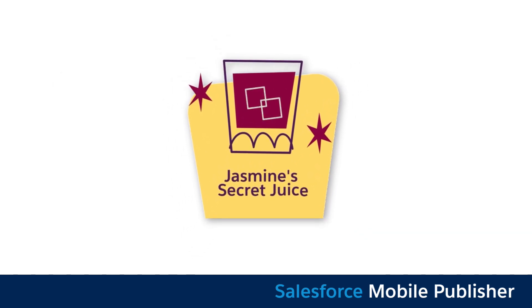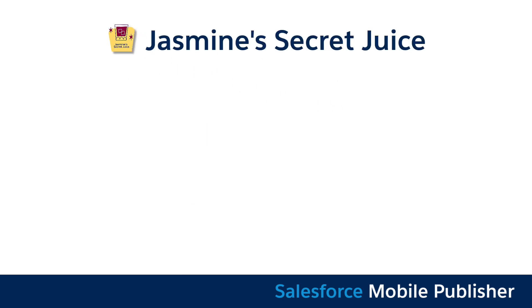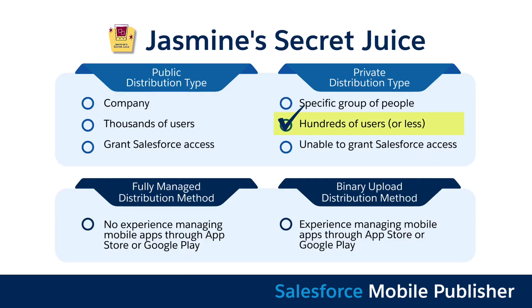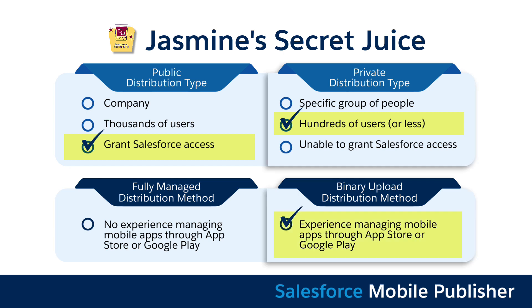Jasmine Secret Juice, on the other hand, has only 50 users. The company grants Salesforce access to their app stores, and they have app store publication experience. Their best option would be to use private distribution type and the binary upload distribution method.